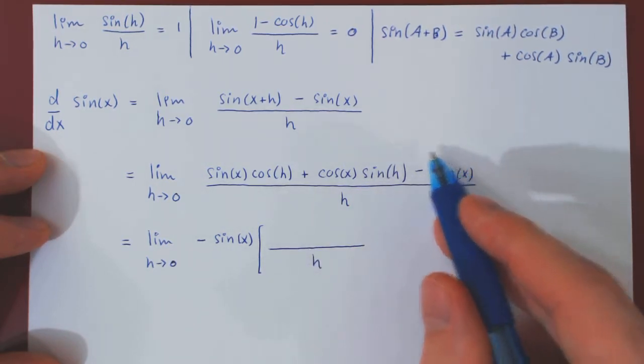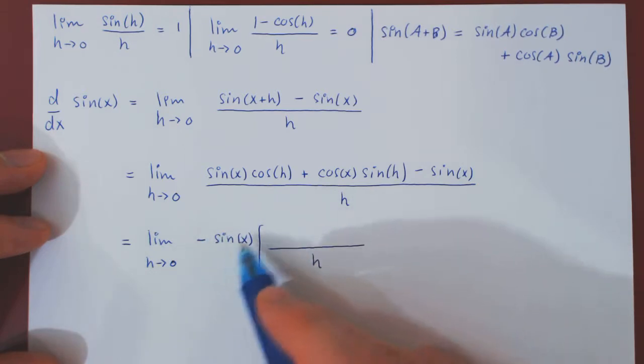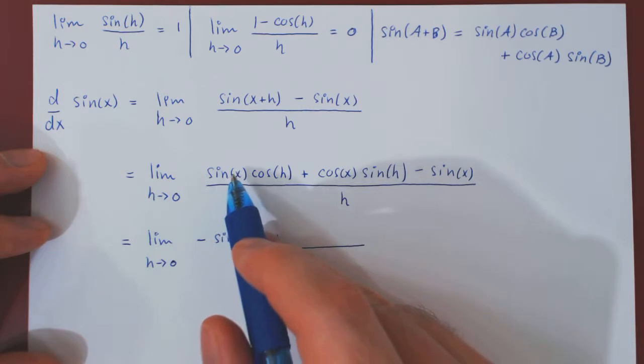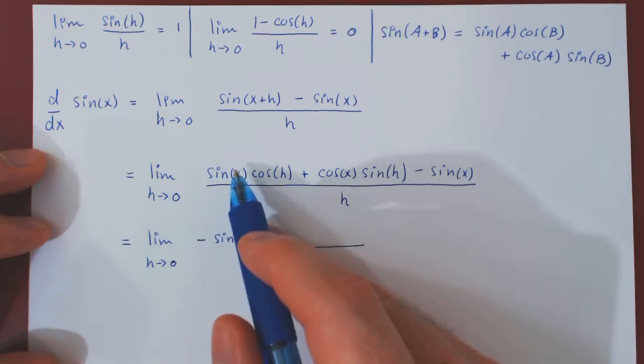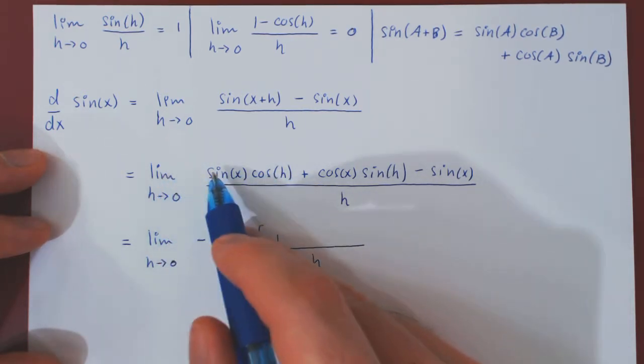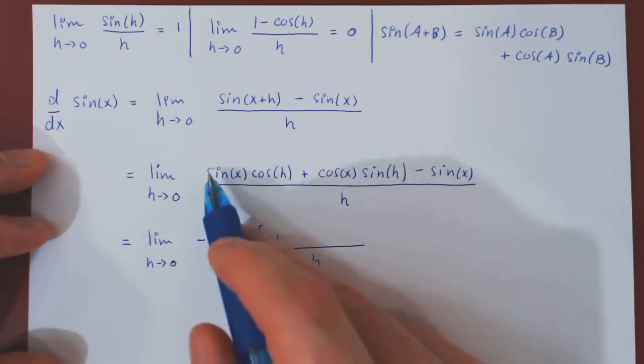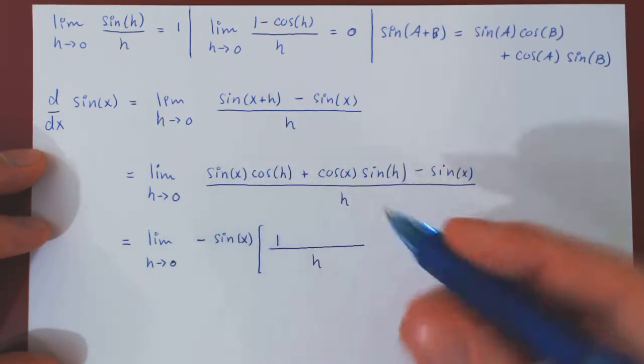So, if I factor, and of course, everything is over h. If I factor from negative sin of x, negative sin of x, that leaves me with 1. And, the second term, if we factor negative sin of x from this term, well, the sin goes away, but we have to cancel off the negative, so we'll be left with negative cos of h.